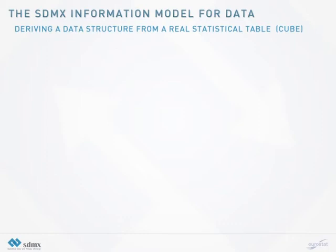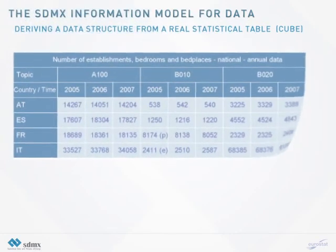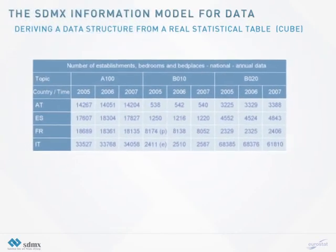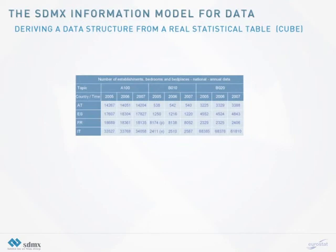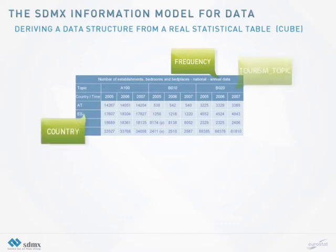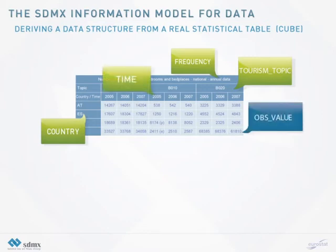To see how it is implemented, let's take a real example from the tourism domain. Let's imagine we have to create a DSD for tourism statistics. Take a simplified table: three tourism topics over three periods. We can identify the following statistical concepts: frequency (in this case annual), country, tourism topic, time, and the observation value, which is the actual single figure.